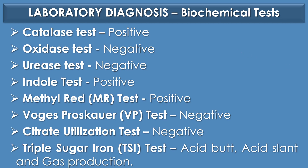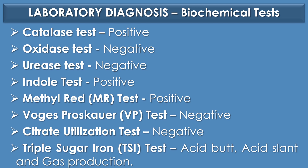Biochemical test-based identification: catalase test — positive; oxidase test — negative; urease test — negative; indole test — positive; methyl red test — positive; Voges-Proskauer test — negative; citrate utilization test — negative; triple sugar iron agar or TSI agar test shows acid butt, acid slant, and gas production. The TSI results for E. coli show acid butt, acid slant, low H₂S production, and gas production is absent.